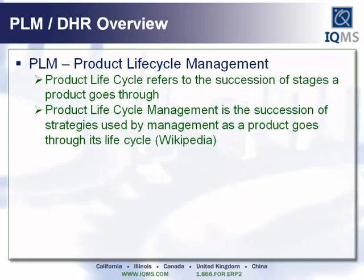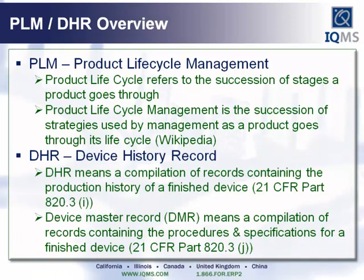PLM stands for product lifecycle management. The product lifecycle refers to the succession of stages a product goes through, and product lifecycle management is the succession of strategies used by management as a product goes through its cycle. DHR is an FDA regulation for device history record — a compilation of records containing the production history of a finished device. Device master record means a compilation of records containing the procedures and specifications for a finished device.